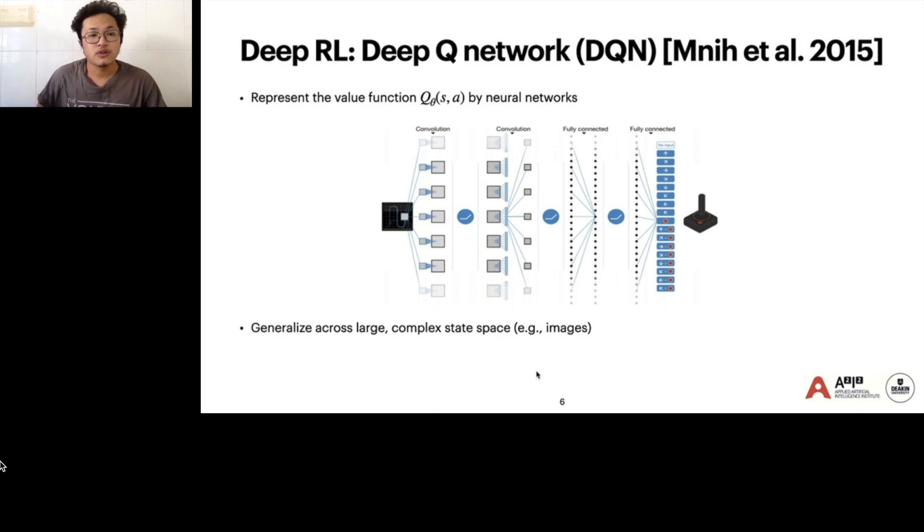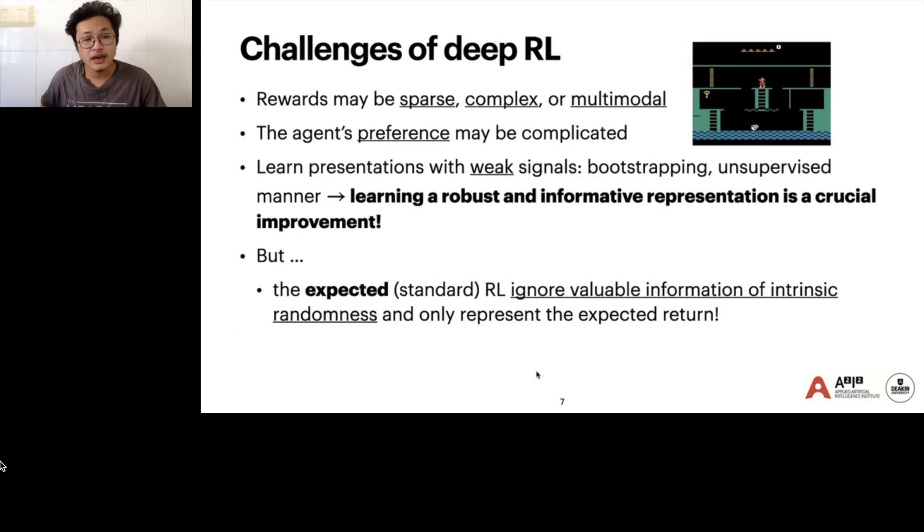A typical algorithm for deep reinforcement learning is deep Q-learning proposed in 2015 that represents the value function by a deep neural network to generalize across a large and complex state space. One of the challenges of deep reinforcement learning is that the rewards in practice might be sparse, complex, or multi-modal, and the agent's preference can be complicated in practice. The learning is performed with weak signals via bootstrapping or unsupervised learning. So that's why learning a robust informative representation is crucial.